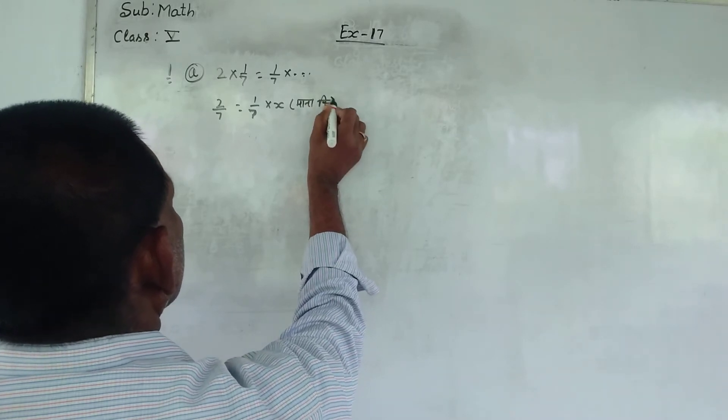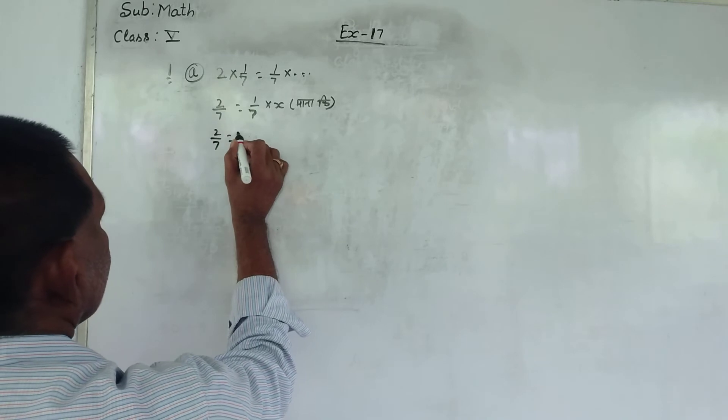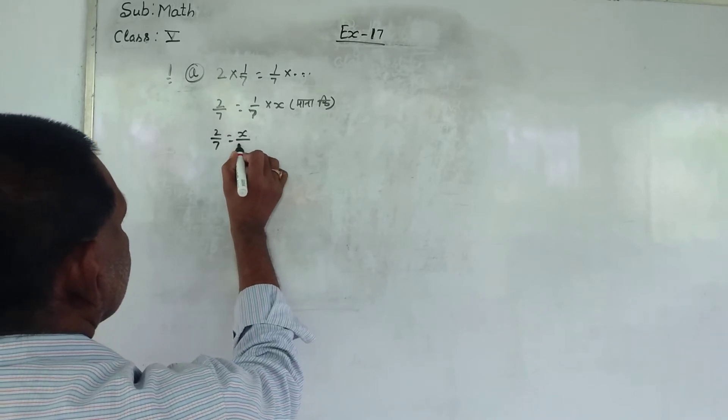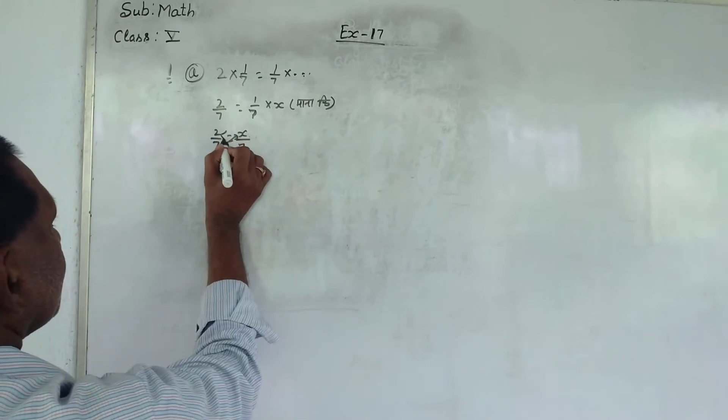Mana ki x size. Toh ye ho gya 2 batti 7 Badawaar x batti 7. Cross multiplication guna ho jayega.